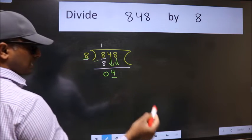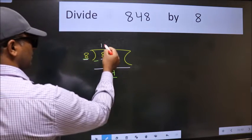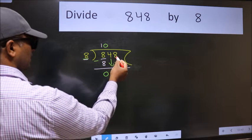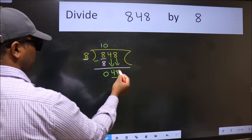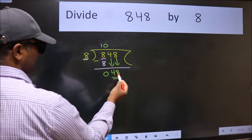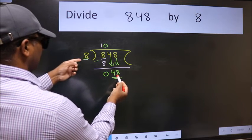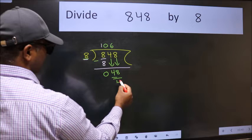And the rule to bring down second number is put 0 here. Then only we can bring this number down. So 48. When do we get 48 in 8 table? 8 6 48.